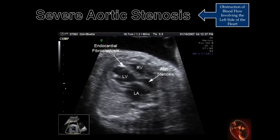This is an example of severe aortic stenosis resulting in endocardial fibroelastosis. Endocardial fibroelastosis may not be obvious from the still frame image. A cine of the contracting heart reveals this pathology more clearly.